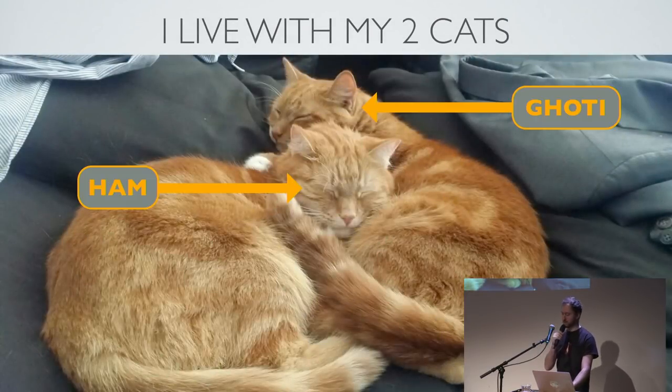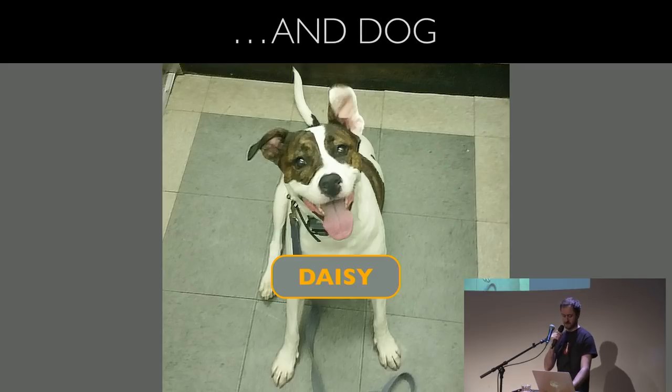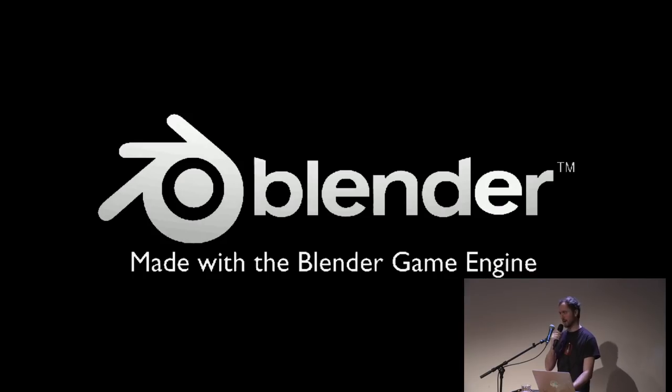I have two cats, Ham and Fish, and now I have a dog named Daisy. I like to add that stuff just because. And I'm making a game in the Blender game engine, cue the collective eye roll. That's 2.79 and not even B.